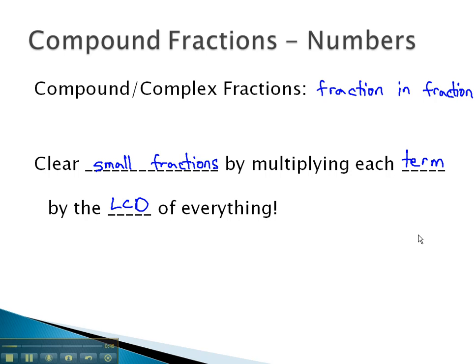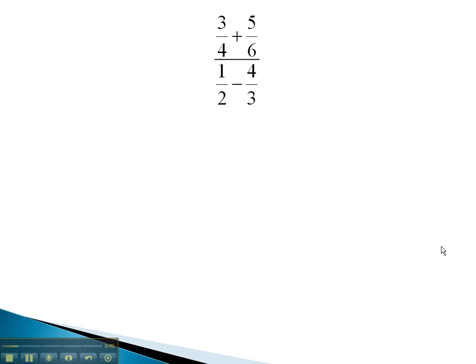So for example, if we have this compound fraction, we could look at the denominators of 4, 6, 2, and 3, and find the least common denominator of all four of those. The least common denominator is 12.